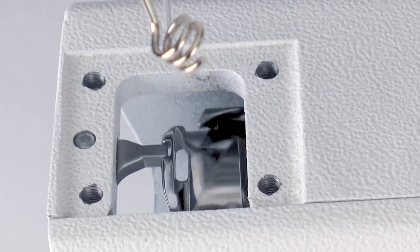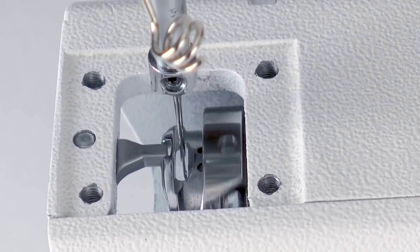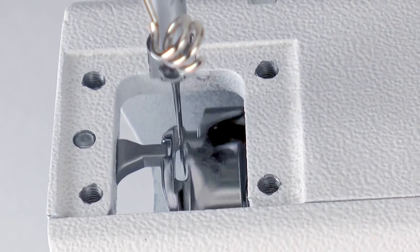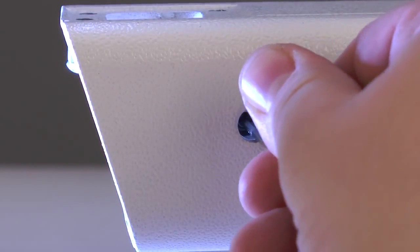Before tightening the other two set screws, rotate the needle a full cycle to make sure the needle does not hit or brush against the hook assembly at any point. Then continue to tighten the other two set screws in the hook assembly.